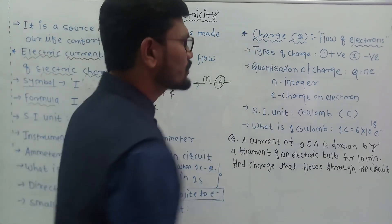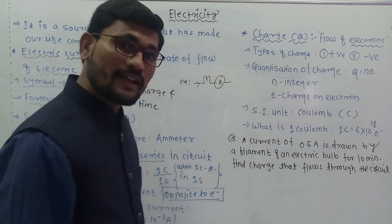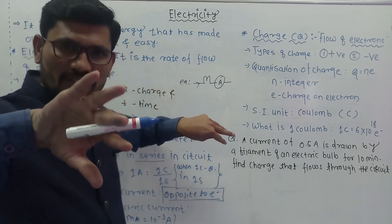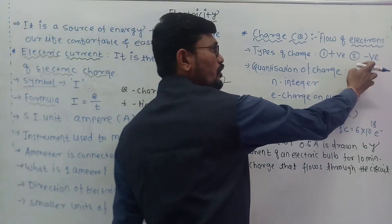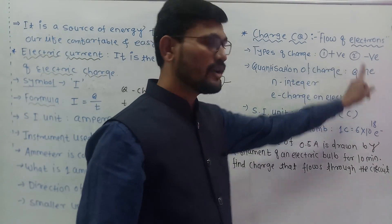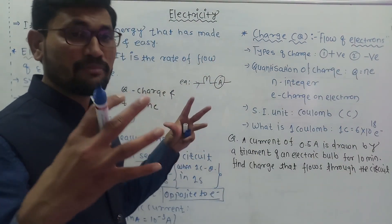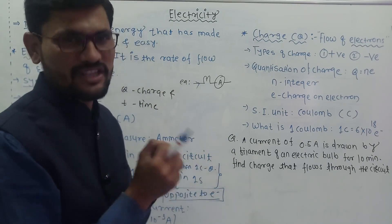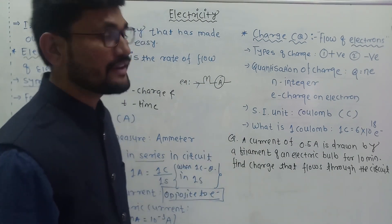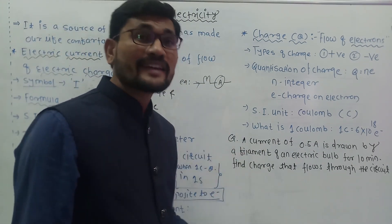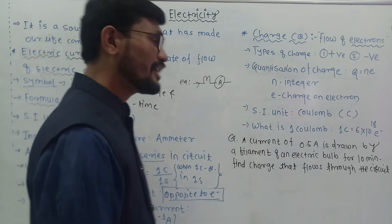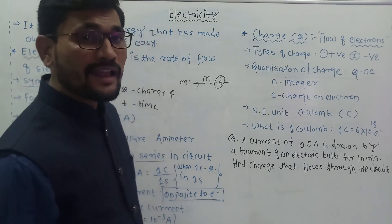Charge has two types: positive and negative. If you bring two positive charges closer, they will repel each other. Similarly, two negative charges will repel. But when you bring a positive and a negative charge together, there will be attraction — both charges attract each other. So charges have both repulsive and attractive properties: repulsion between like charges (positive-positive or negative-negative) and attraction between unlike charges (positive-negative).